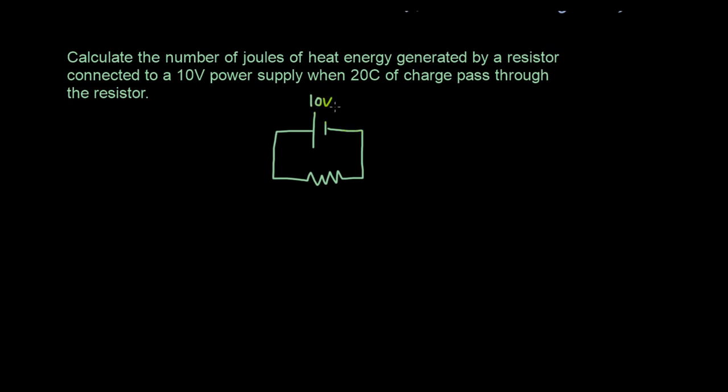Which means it supplies 10 joules of energy per coulomb of charge. And we have 20 coulombs flowing through the resistor, so 20 coulombs flow through the resistor, 20 coulombs of charge. How much heat energy is generated by the resistor?